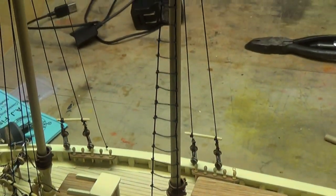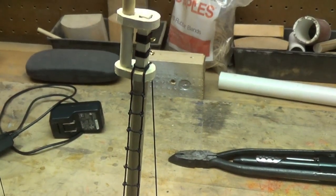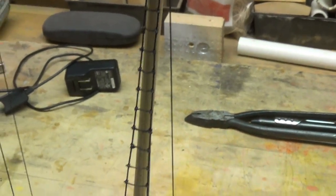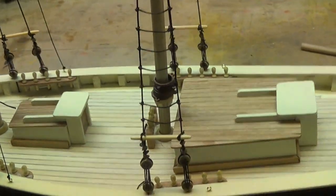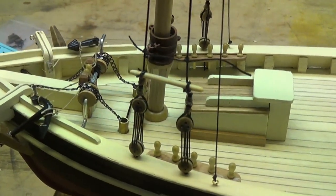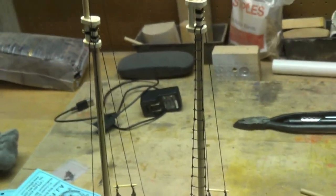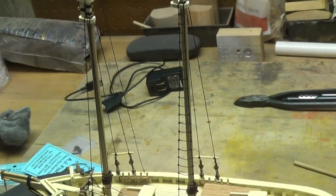Just finished tying all the rat lines on the port side of the main mast, and we're now beginning to tie them on the port side foremast. Only three more sets to do.